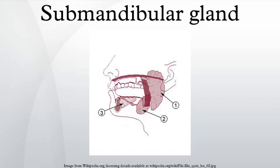The submandibular gland accounts for 80% of all salivary duct calculi, possibly due to the different nature of the saliva that it produces and the tortuous travel of the submandibular duct to its ductal opening for a considerable upward distance.